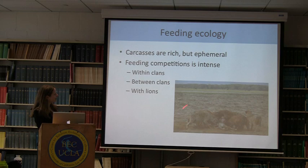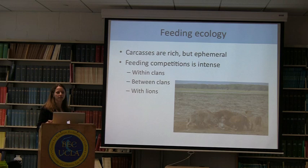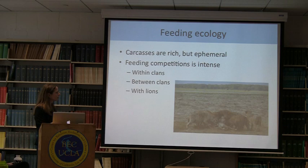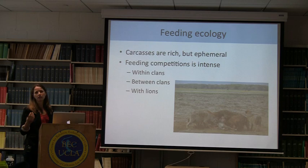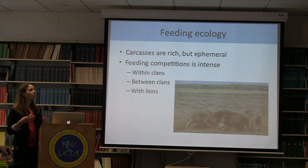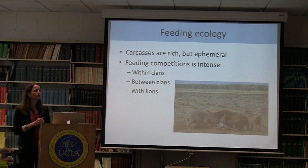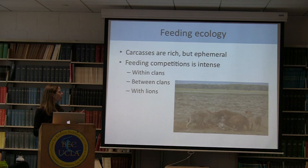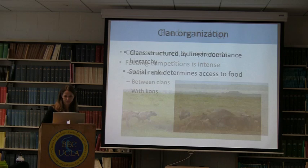These social groups are more primate-like than carnivore-like. Hyenas feed primarily on large to medium-bodied ungulates that they primarily kill themselves. These kills or carcasses represent rich but ephemeral food sources, so you have really intense competition to access food at these carcasses. Feeding competition from the perspective of a hyena occurs at several different levels: within clans, between clans for food or territory, and also with lions — hyenas' main competitor. Lions will steal food from hyenas, but hyenas can also steal food from lions.